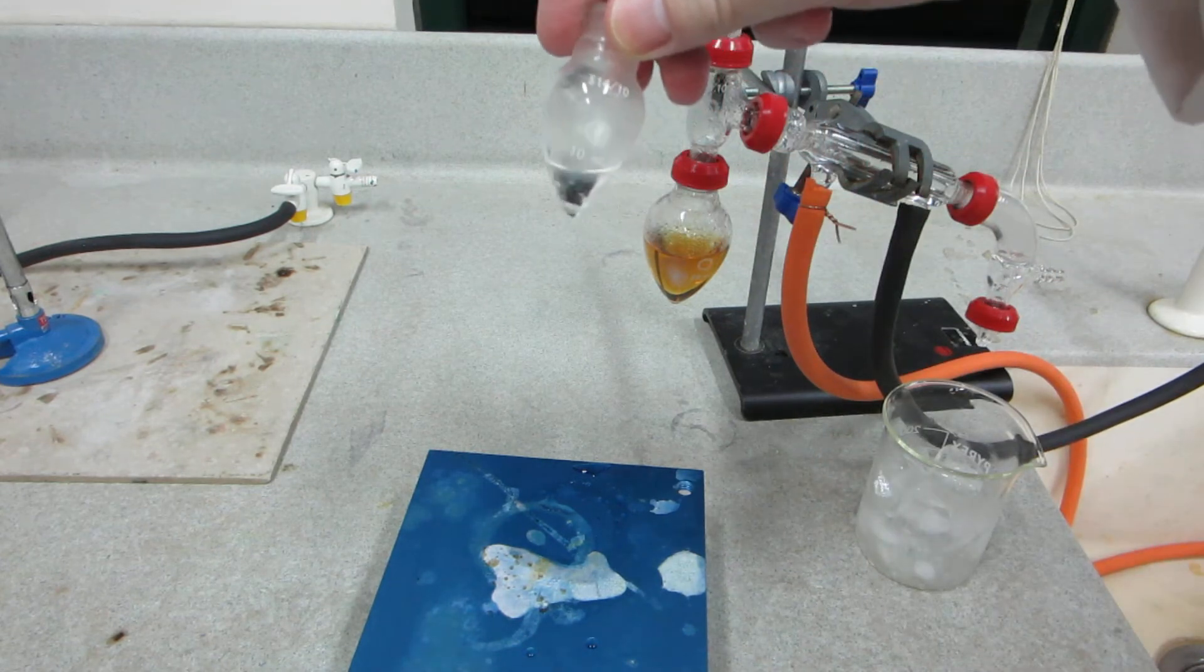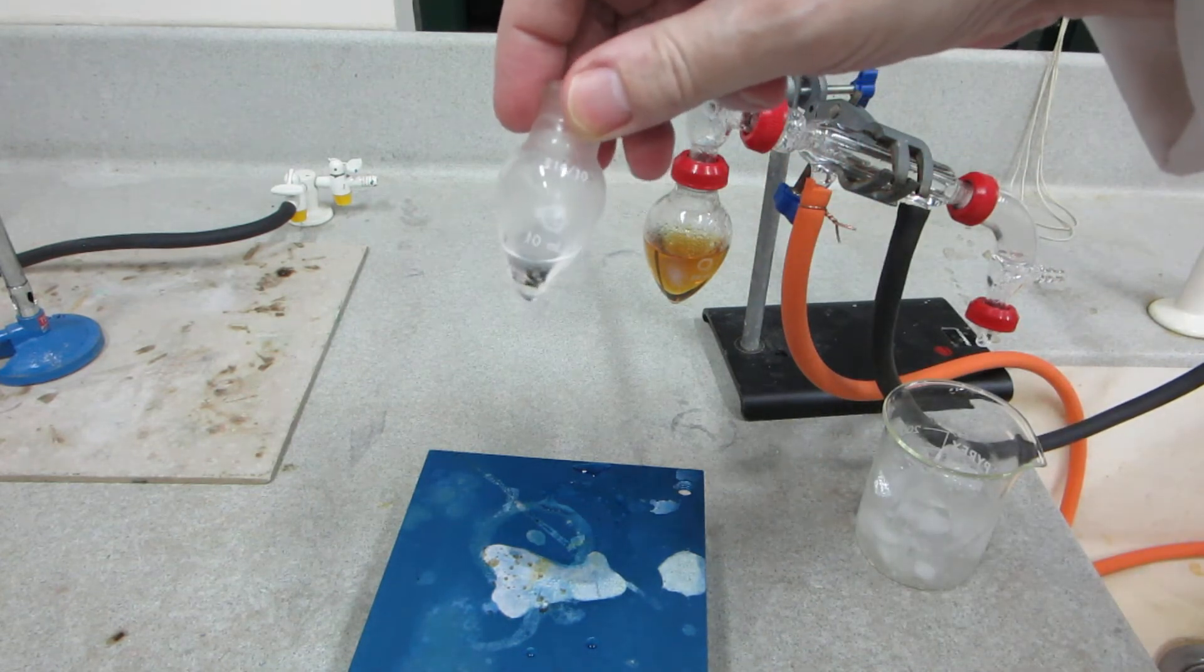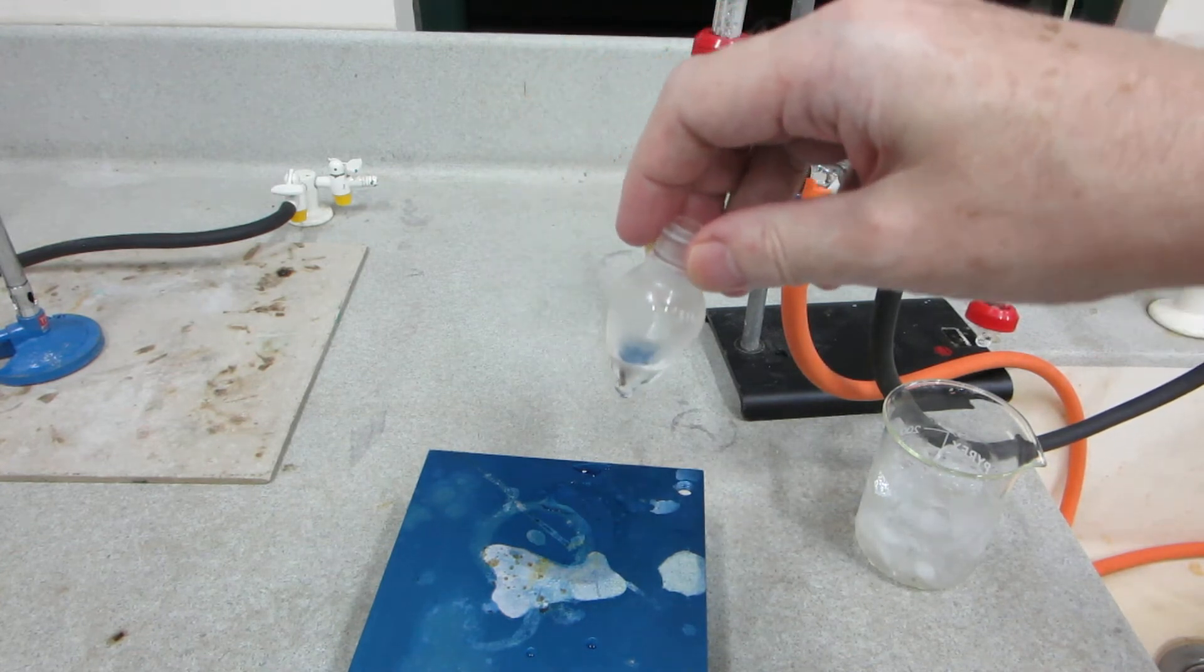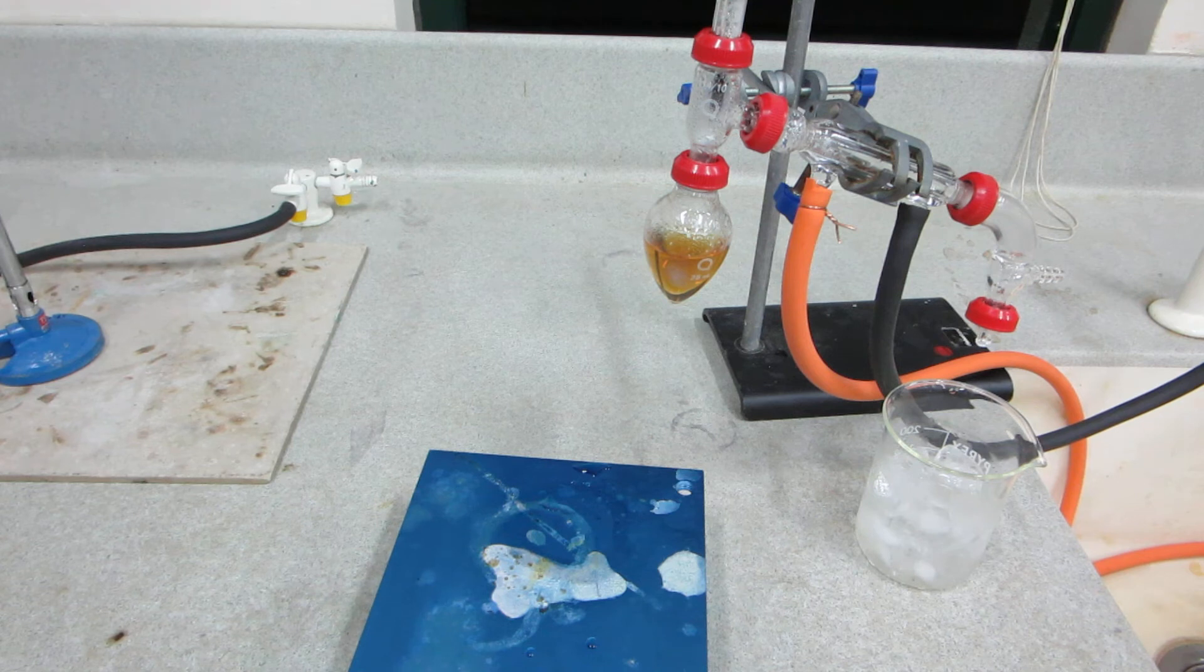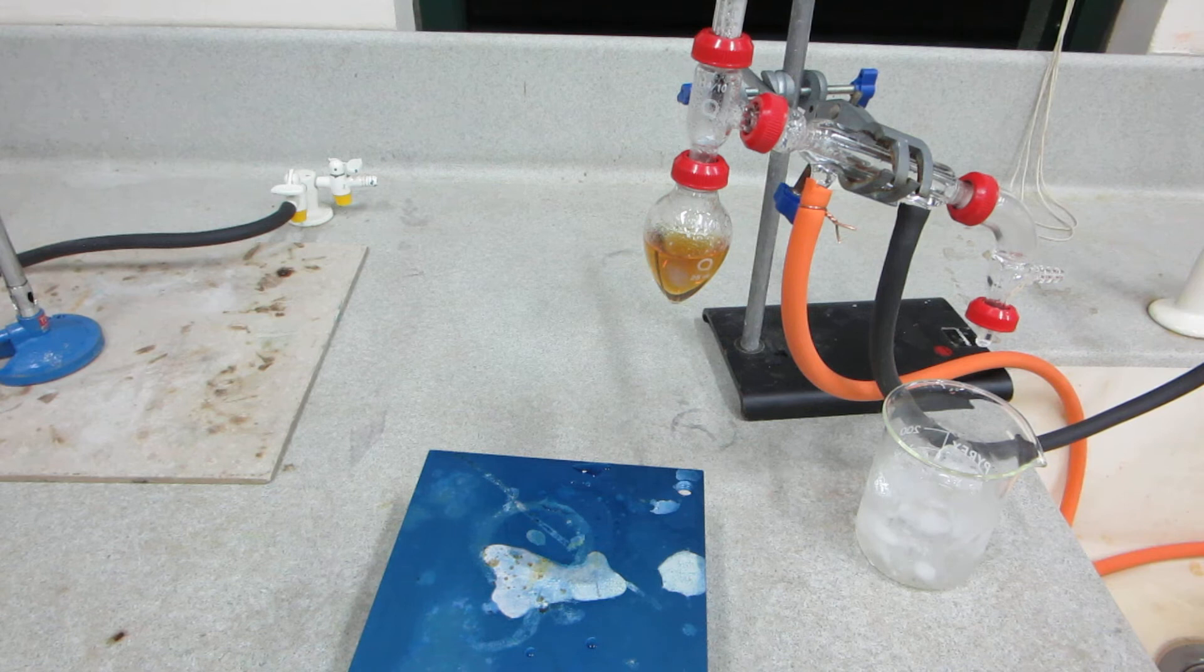We've got about 2 to 3 mils of product there. What we'll do is quickly weigh that since we've got a pre-weighed flask, so we'll remove the excess condensation and get a mass of crude product.